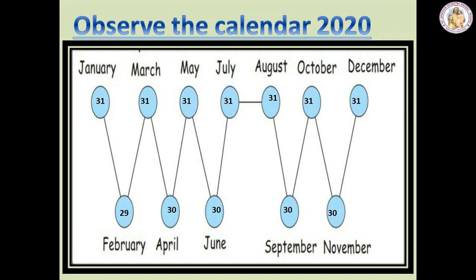Observe the calendar at your home and write the number of days in each month. We come to know that January, March, May, July, August, October, December have 31 days, and April, June, September and November have 30 days. The month February has 29 days in a leap year.